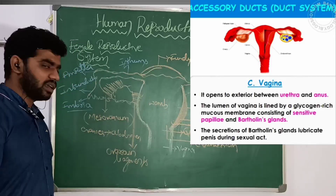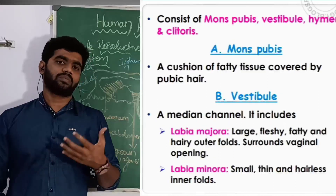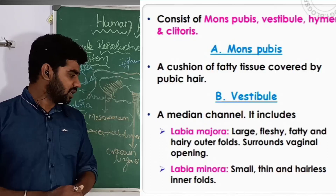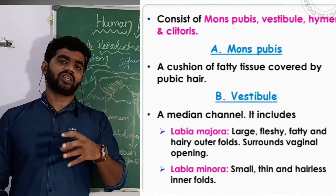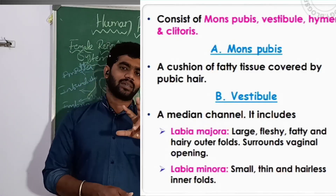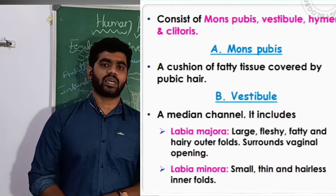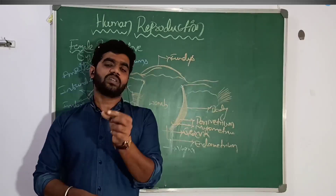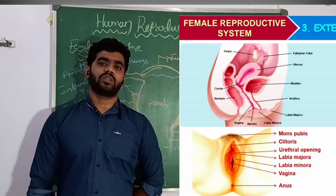The external genitalia has four parts: mons pubis, vestibule, hymen, and clitoris. The mons pubis is a fatty tissue covered by pubic hair. The vestibule includes the labia majora and labia minora. The labia majora is thick skin covered by pubic hair, while the labia minora is thinner folds of skin without pubic hair.